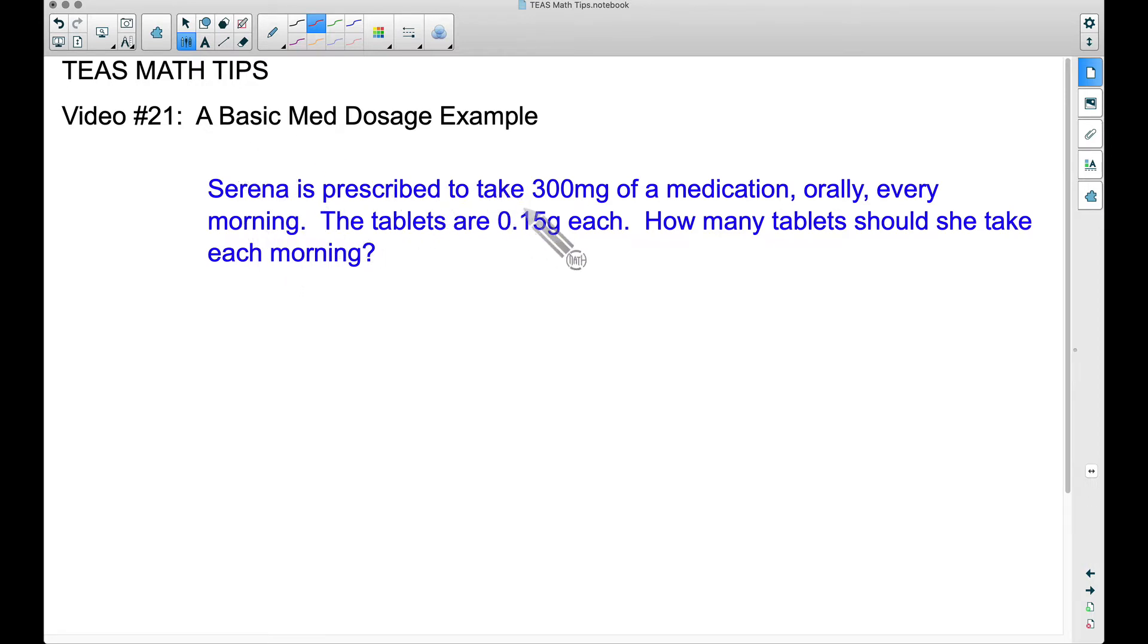Serena is prescribed to take 300 milligrams of a medication orally every morning. The tablets are 0.15 grams each. How many tablets should she take each morning? Now some things you have to keep your eyes out for here are your units. We have milligrams and grams. And if you didn't know this, there is a conversion.